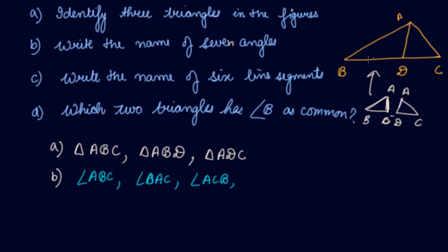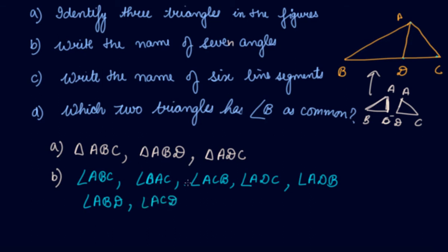Then triangle ADC is the other triangle. From that triangle: angle ADC, then angle ADB — this is angle ADC and this is angle ADB. Angle ADB, then one angle is ABC, the other angle is ADB. And the other angle is ACD — angle ACD.